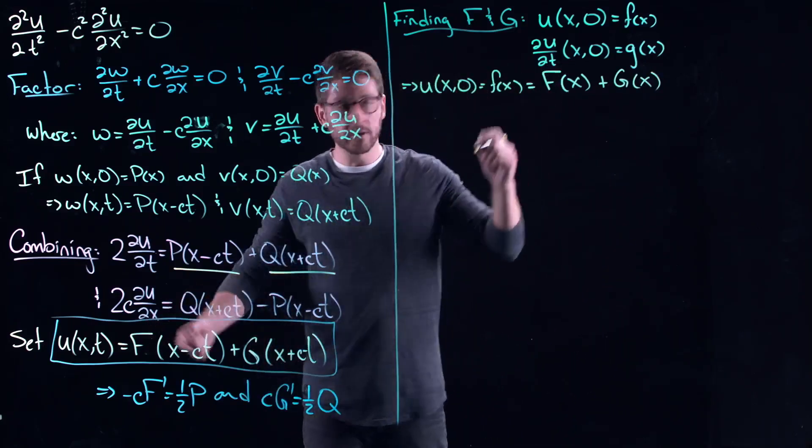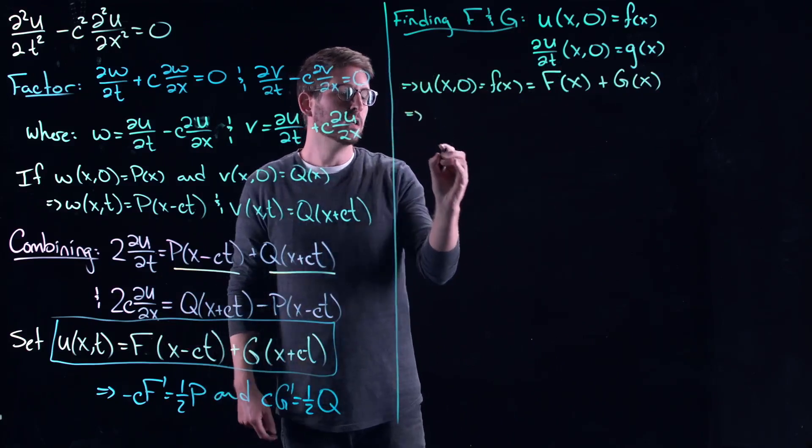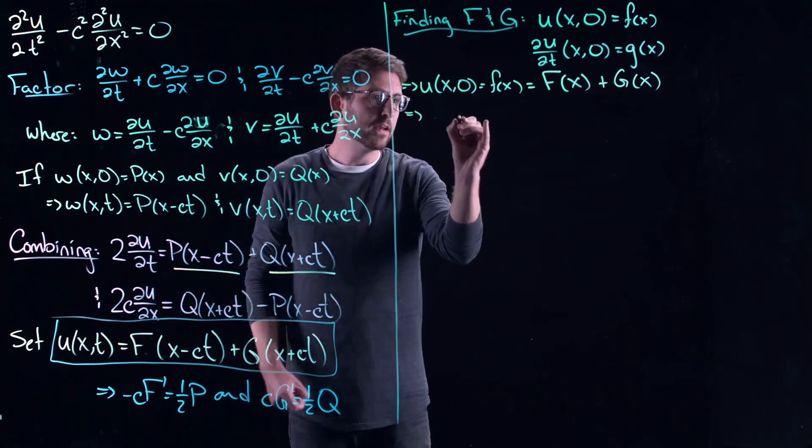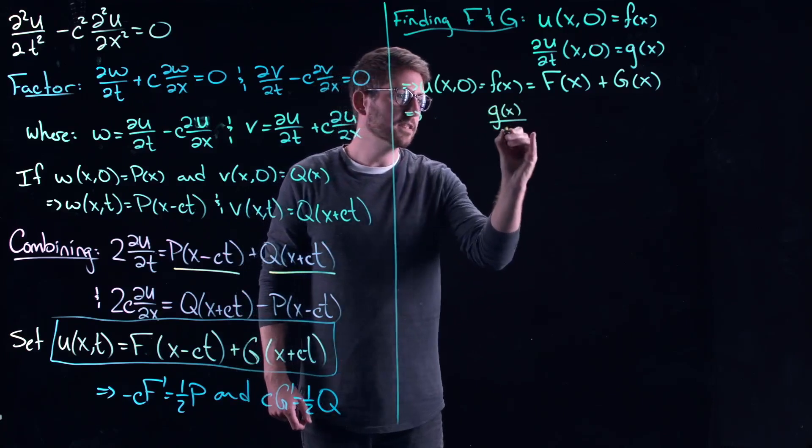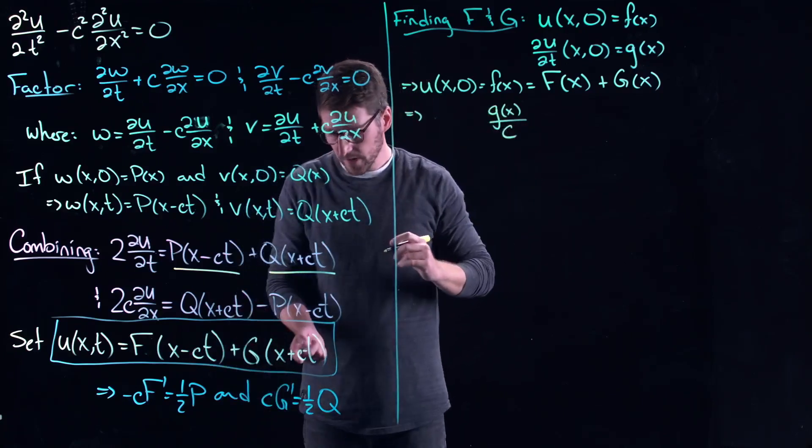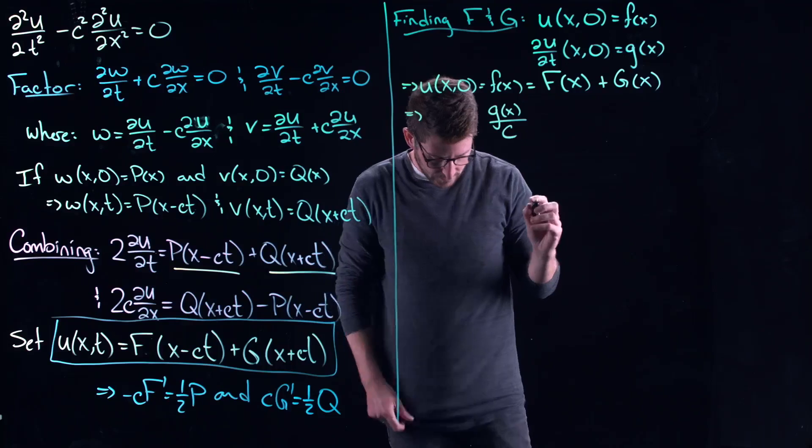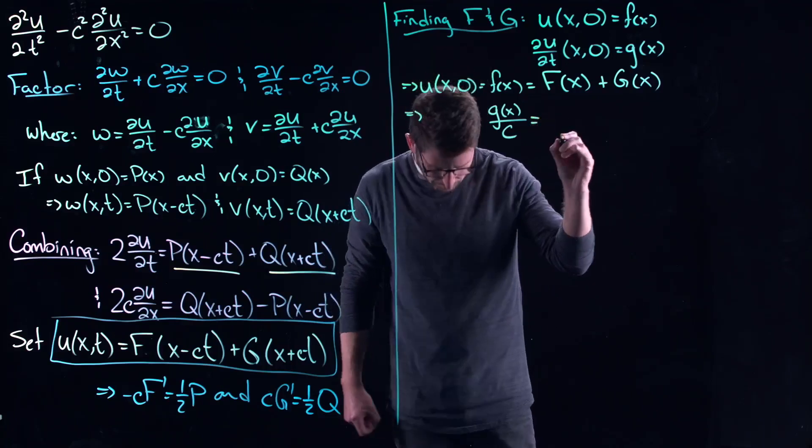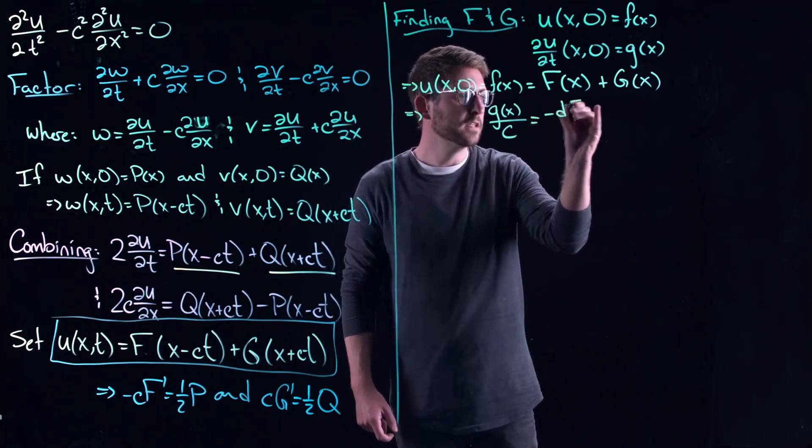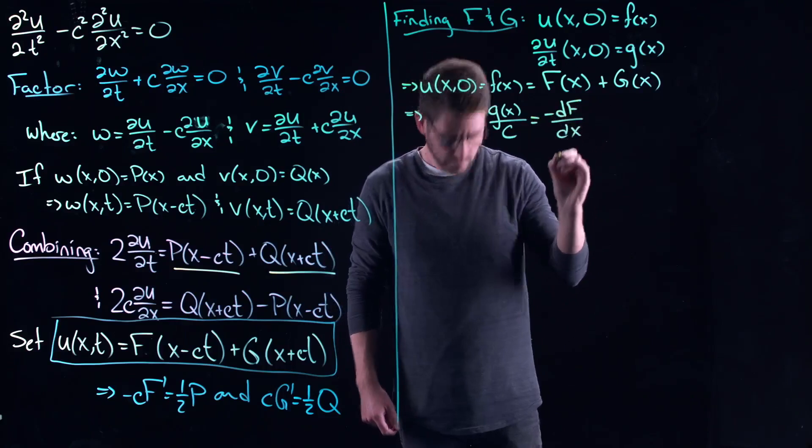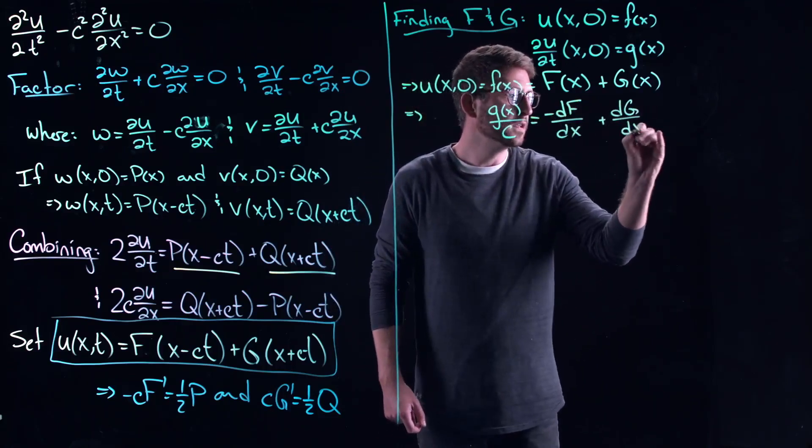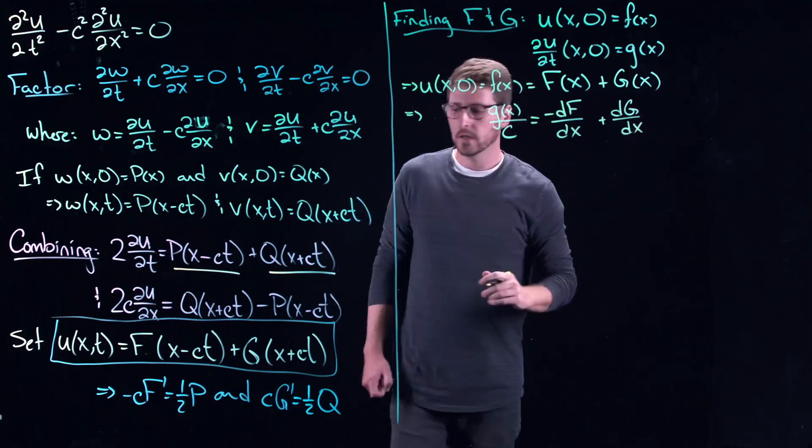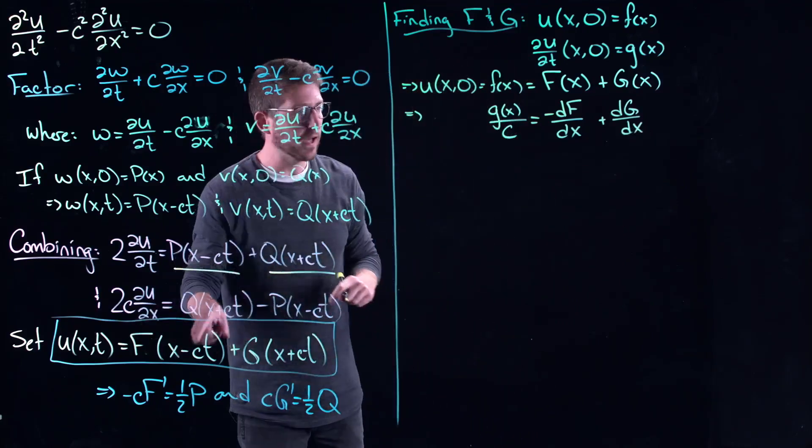Similarly, if you do the differentiation here, you are going to get that G of x divided by C, because you're going to get C's that come out whenever you do the derivatives here. This thing is equal to minus dF/dx, and then plus dG/dx. And it just comes from differentiating this thing and evaluating at zero.